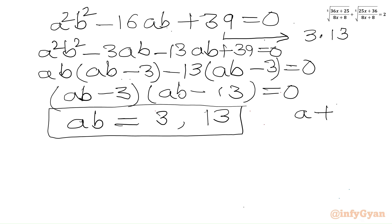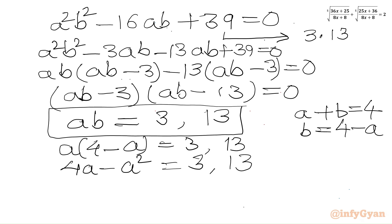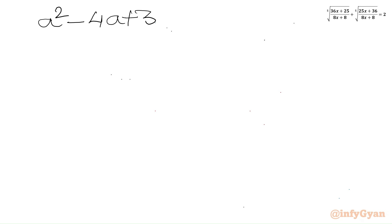From equation 1, A plus B equals 4, so B equals 4 minus A. Substituting: A times (4 minus A) equals 3 and 13. This gives 4A minus A squared equals 3 and 4A minus A squared equals 13. Taking all terms to the RHS: A squared minus 4A plus 3 equals 0, and A squared minus 4A plus 13 equals 0.